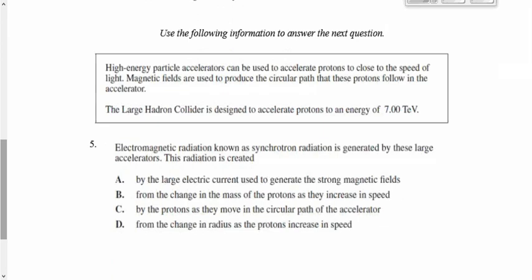And last one, this is a good one. High energy particle accelerators can be used to accelerate protons to close to the speed of light. Magnetic fields are used to produce a circular path that these protons follow. And then this talks about the LHC, the Large Hadron Collider, which accelerates protons to seven tera electron volts. EMR, known as synchrotron radiation, is generated by these large accelerators.